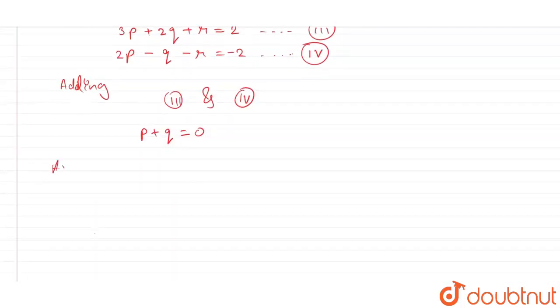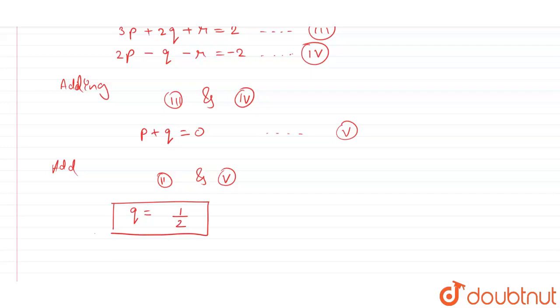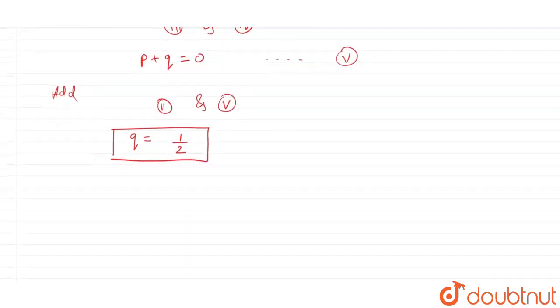Similarly, adding equation 2 and 5, which is our equation 5, we get q is equal to 1 by 2. Therefore, we have the value of q here, let us remember it for further usage.